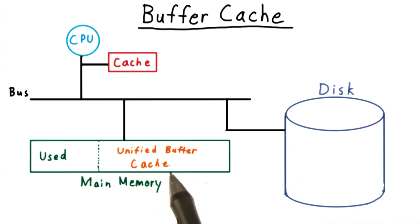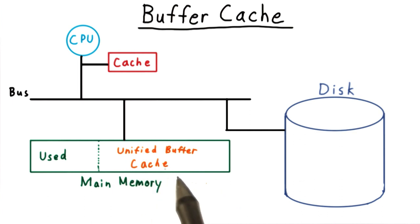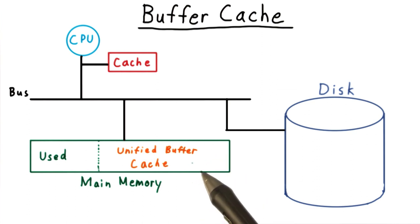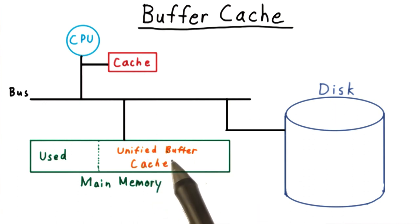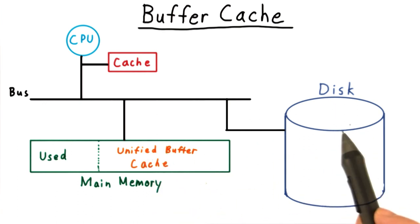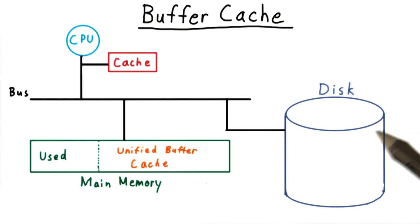We'll call the portion of memory used as the cache for disk the unified buffer cache — a name it earned for some obscure historical reasons. The terminology here can be a little confusing, so I want to emphasize that we're talking about in-memory caching of the contents on the disk, not the RAM on the disk controller that the device controller here might use.